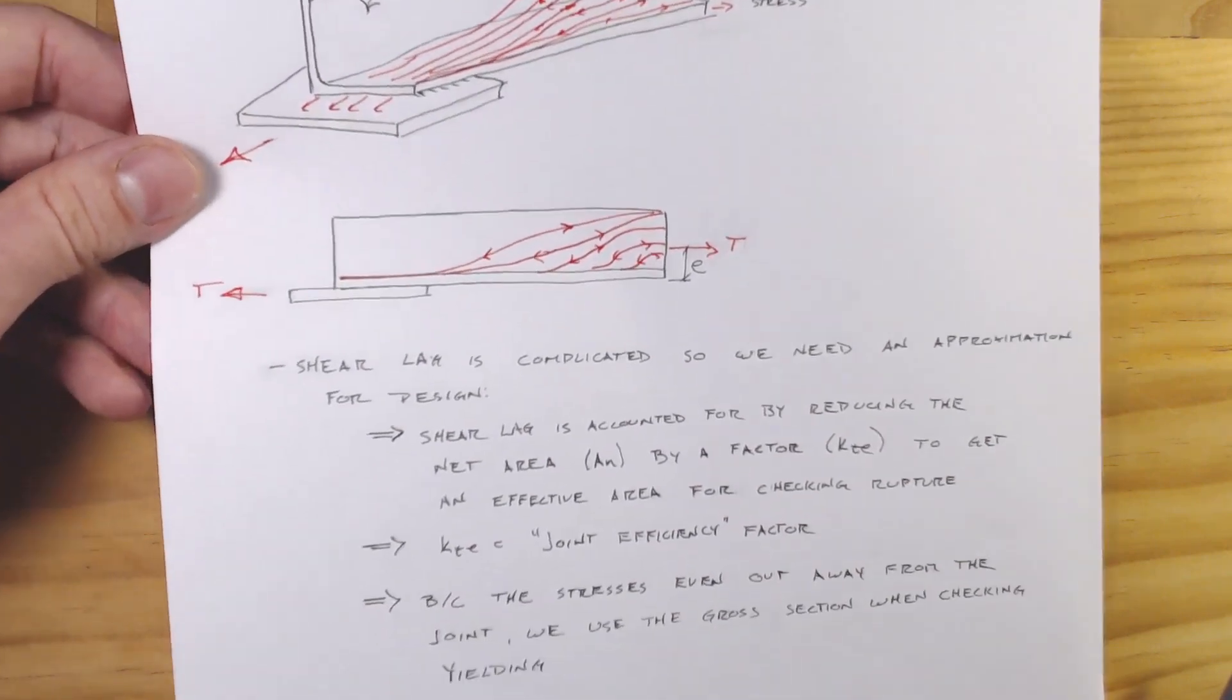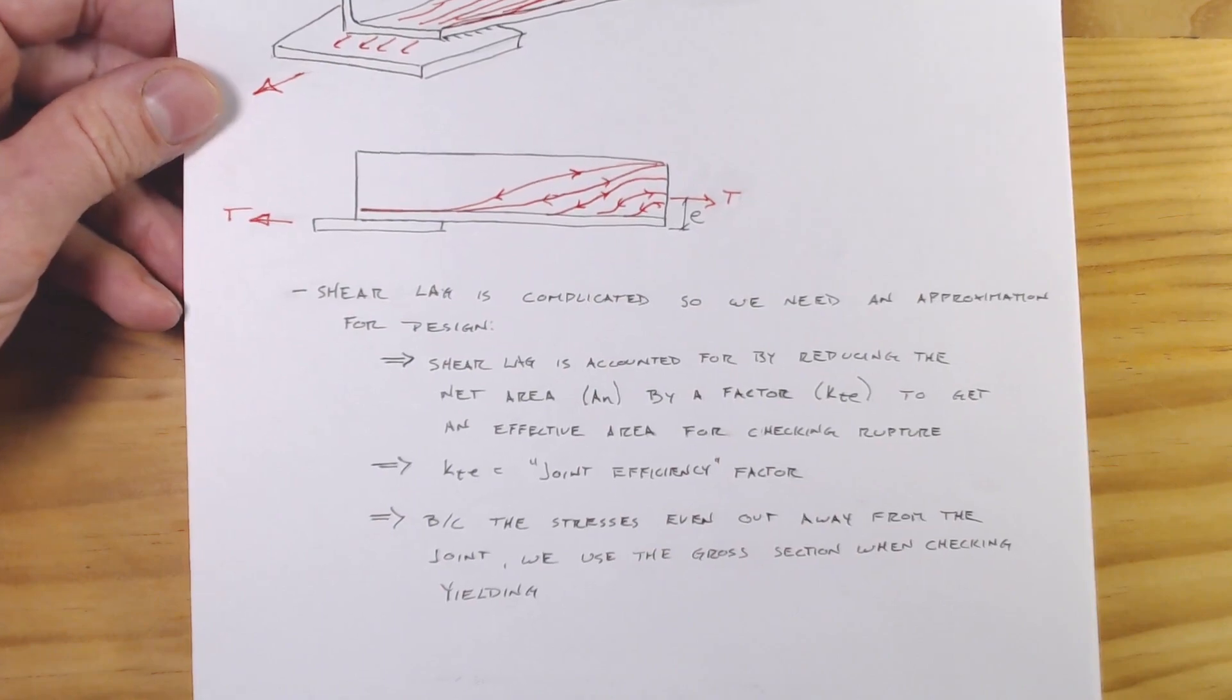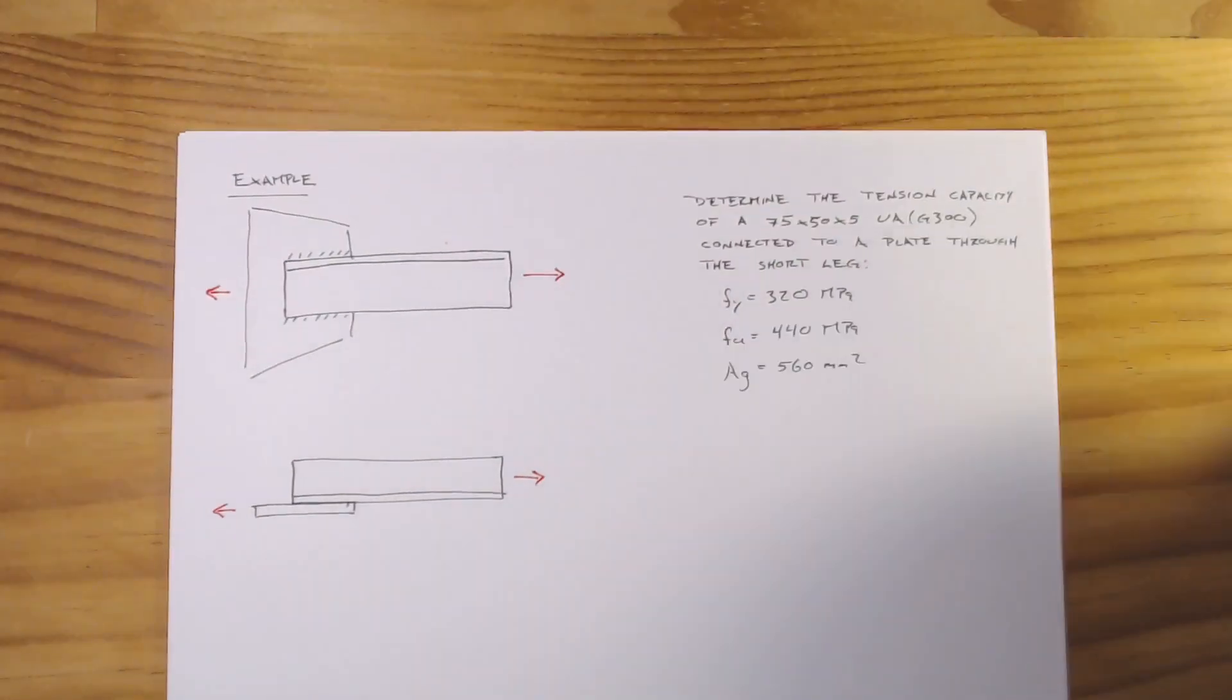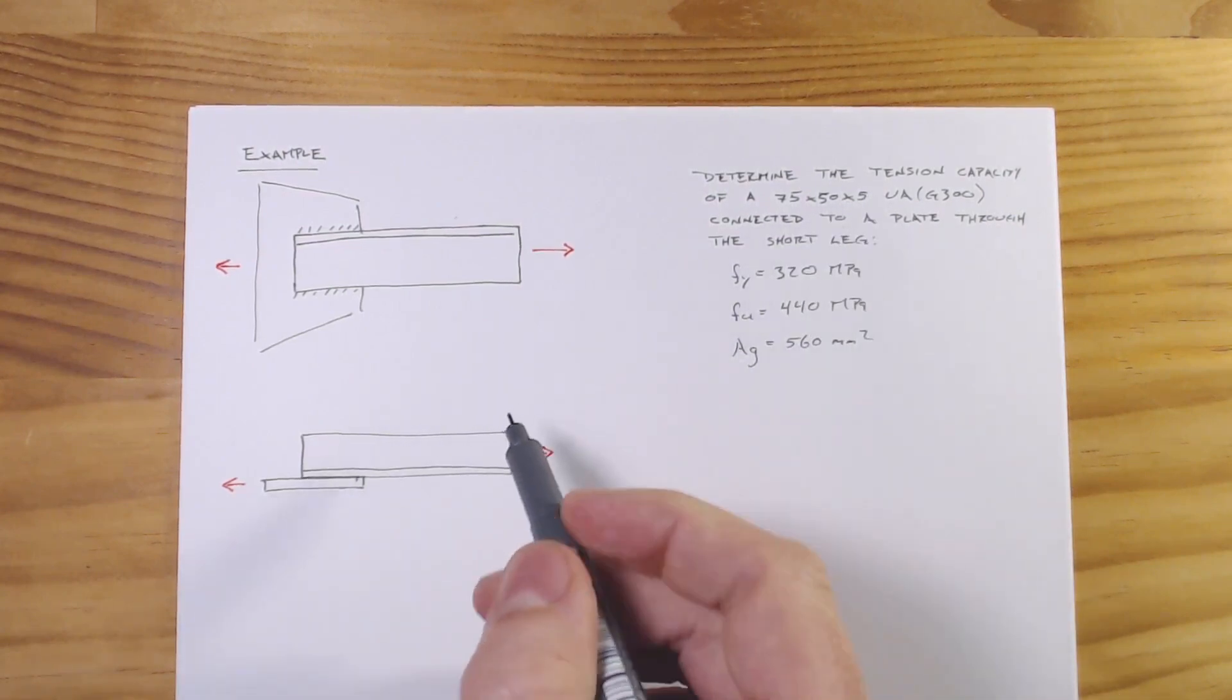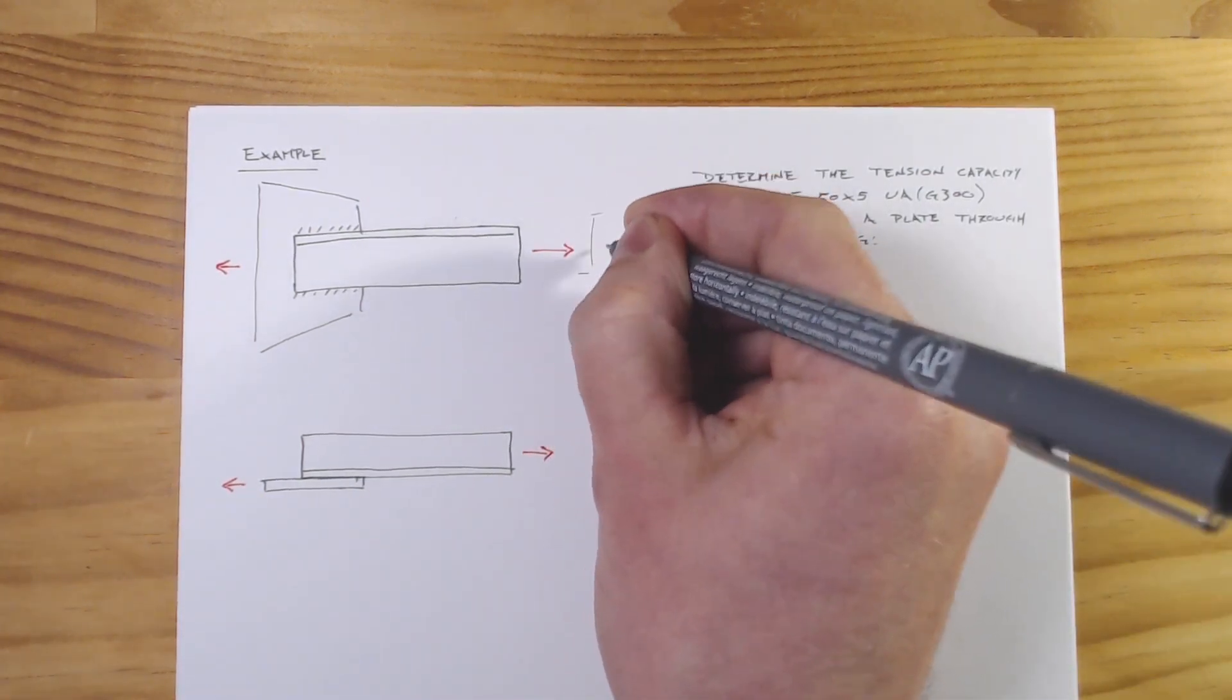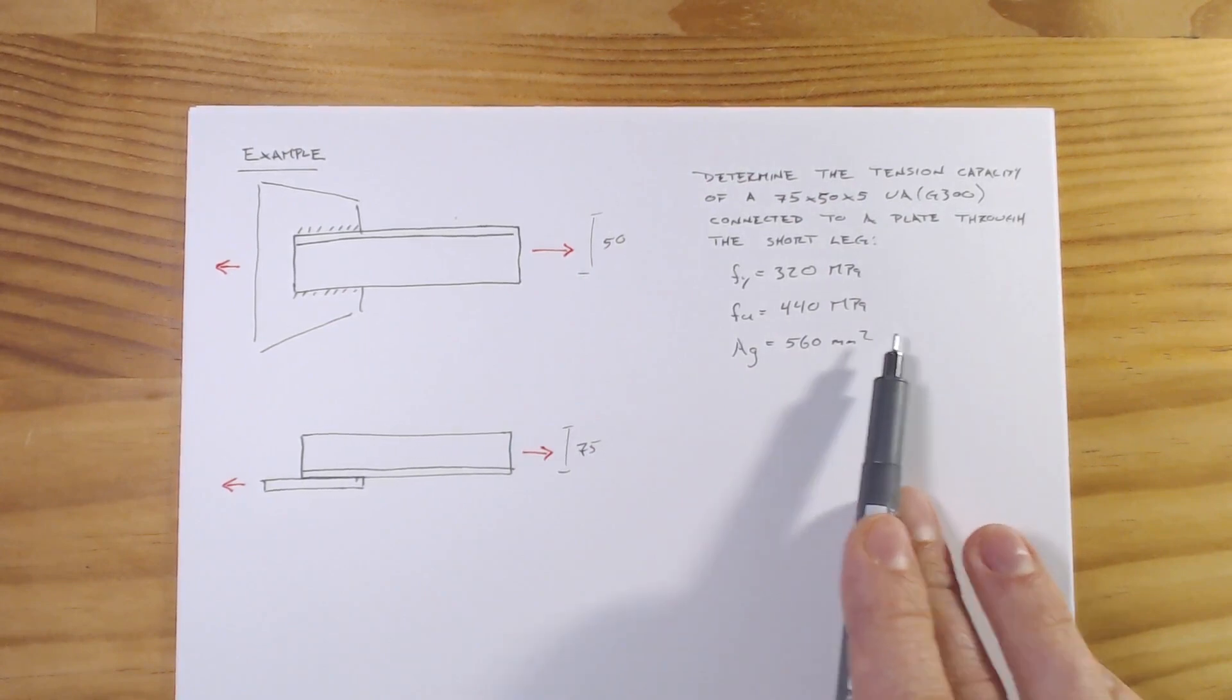Let's just run through a quick example and really how this kte factor gets used when we're doing a design or some analysis of a member in tension. I've got a design example for you here. It's really just a simple angle, so it's an unequal angle, a UA that's 75 by 50 by 5, so 5 is the thickness. It's connected through the short leg, so that distance would be 50 and that distance would be 75.